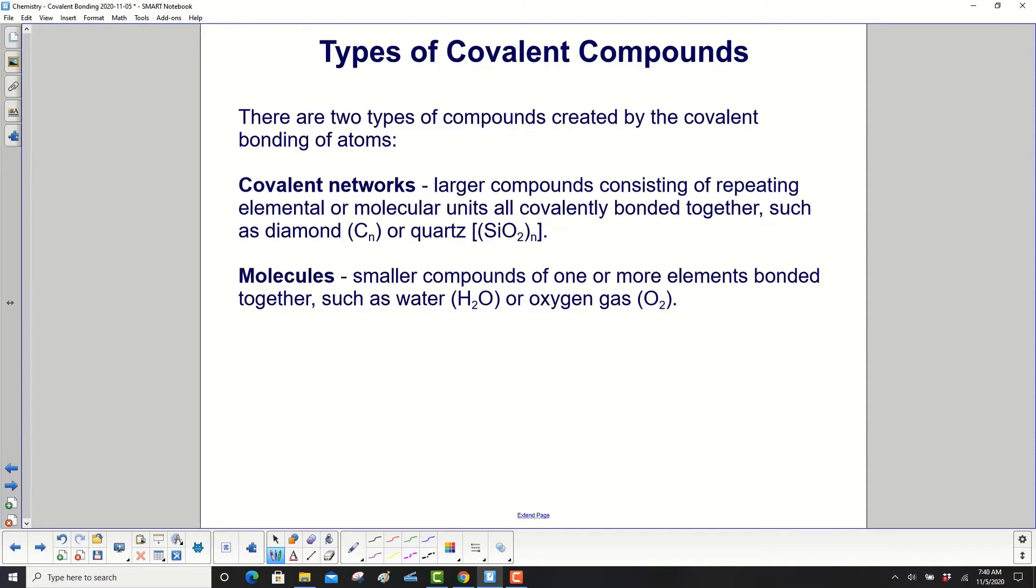There are two types of compounds created by the covalent bonding of atoms. One is a covalent network. Those are larger compounds consisting of repeating elemental or molecular units all covalently bonded together, such as diamond, C sub n, n means a number, a pretty big number, and C of course is carbon.